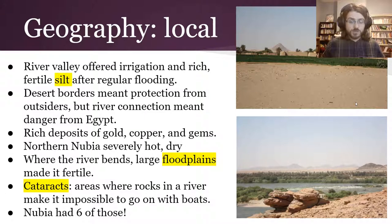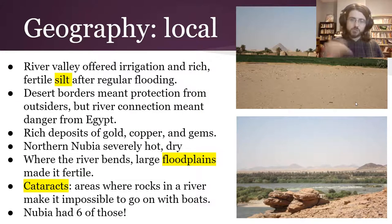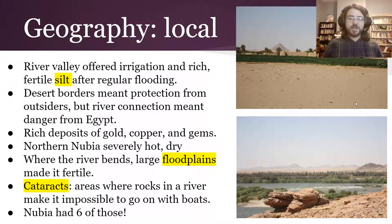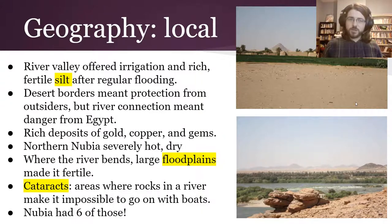Cataracts are areas within a river — similar to Richmond, actually — where there are rocks and rapids that mean you can't go any further upriver without taking your boat out and around. That meant you had to stop there, and maybe you would trade while you were there. Nubia has six cataracts, six different areas you'd have to get out and go around, and as they became masters of those cataracts, they also became masters of the trade that would go up and down the river.